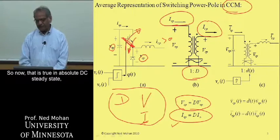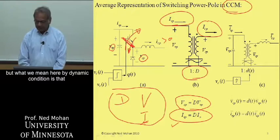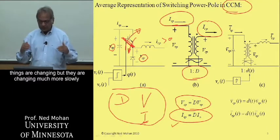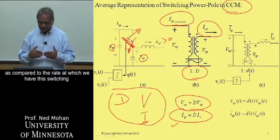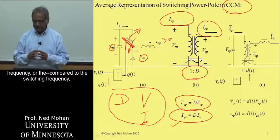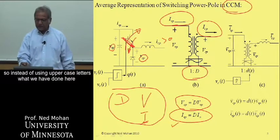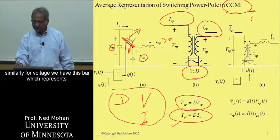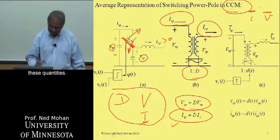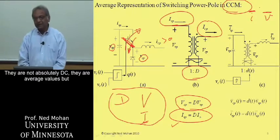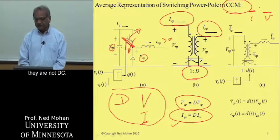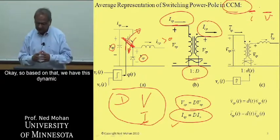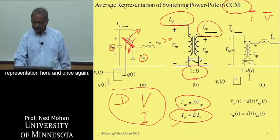That is true in absolute DC steady state. In dynamic conditions, things are changing but much more slowly compared to the switching frequency. Instead of uppercase letters, we use a bar symbol on top to represent these quantities. They are not absolutely DC — they are cycle-by-cycle averages which change very slowly. Based on that, we have this dynamic representation.